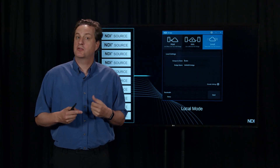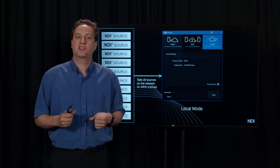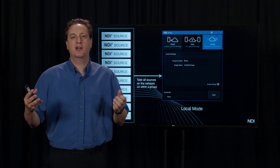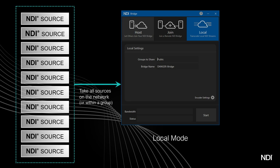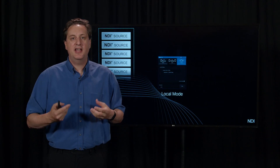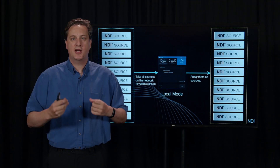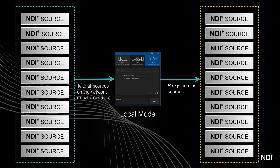Let's think about a hypothetical network with about eight or ten video sources on it. What NDI Bridge does is you run it, put it in local mode, and say go. It goes out and finds all of the sources on your network. It then takes all of those sources and advertises all of them again onto the local network. It is acting much like a proxy — it can take sources on your network and put them back out.